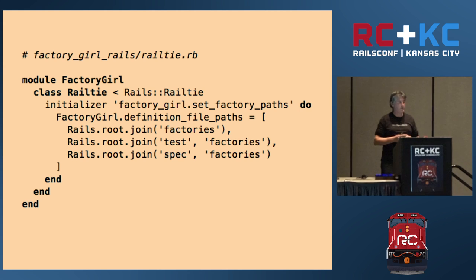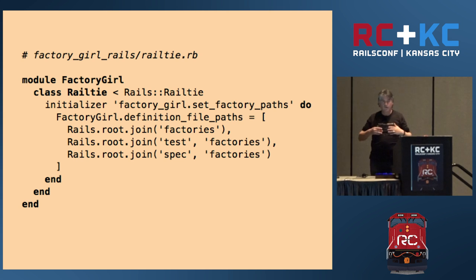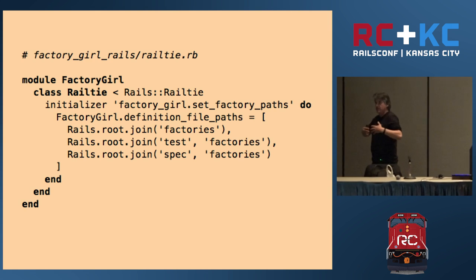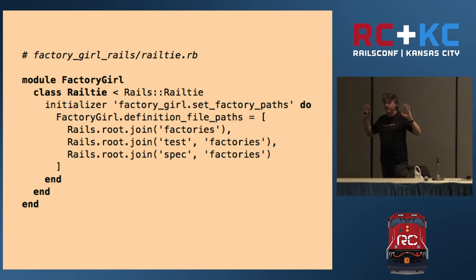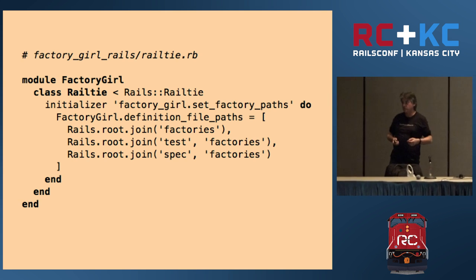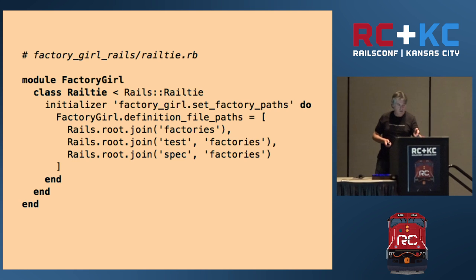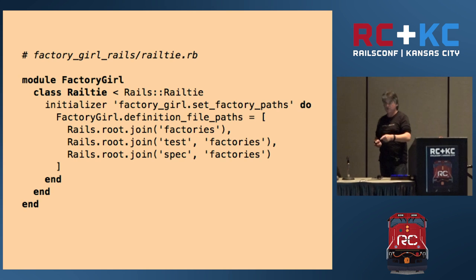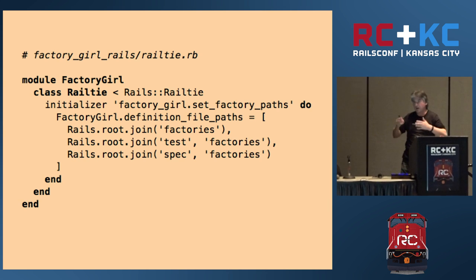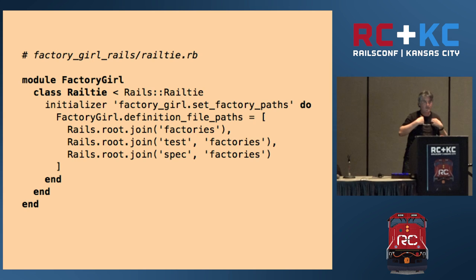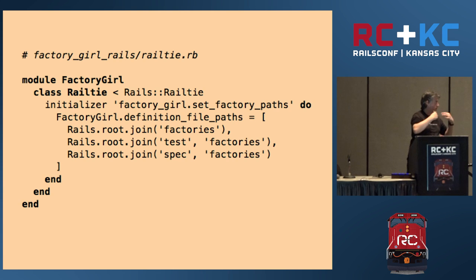Here's an example — a railtie from FactoryGirl. The initializer block is FactoryGirl declaring: when the application is initialized, run this code. At this point FactoryGirl knows that rails_root is already defined — that's a contract you can assume. In this case, FactoryGirl is setting up some factory paths. The way FactoryGirl integrates with Rails is to define a railtie and say: when you are booting, call me and I will configure myself.